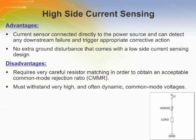High side current sensing techniques connect the current sensor element between the supply and the load. Current is measured by looking at the voltage drop across the resistor placed between the supply and the load. The traditional approach has been the use of a differential amplifier, employed as a gain amplifier and a level shifter from the high side to ground. When low side sensing is not an option due to added ground disturbance, high side sensing is required. High side current sensing enables diagnostic systems to detect shorts to ground.